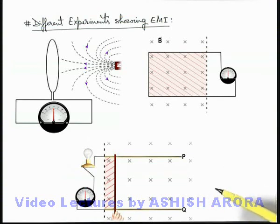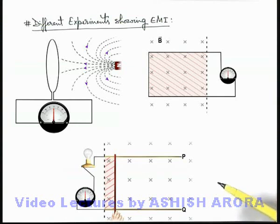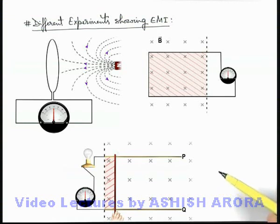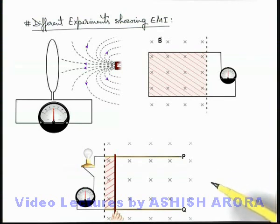So all these experiments give us the idea about how electromagnetic induction takes place. The basic phenomenon is that whenever there is a relative motion between a magnetic field and a conductor — whether the field is moving or the conductor is moving — in such a way that the total magnetic flux associated with a loop or conductor changes, an EMF is induced which can cause an induced current in the circuit if the circuit is closed.